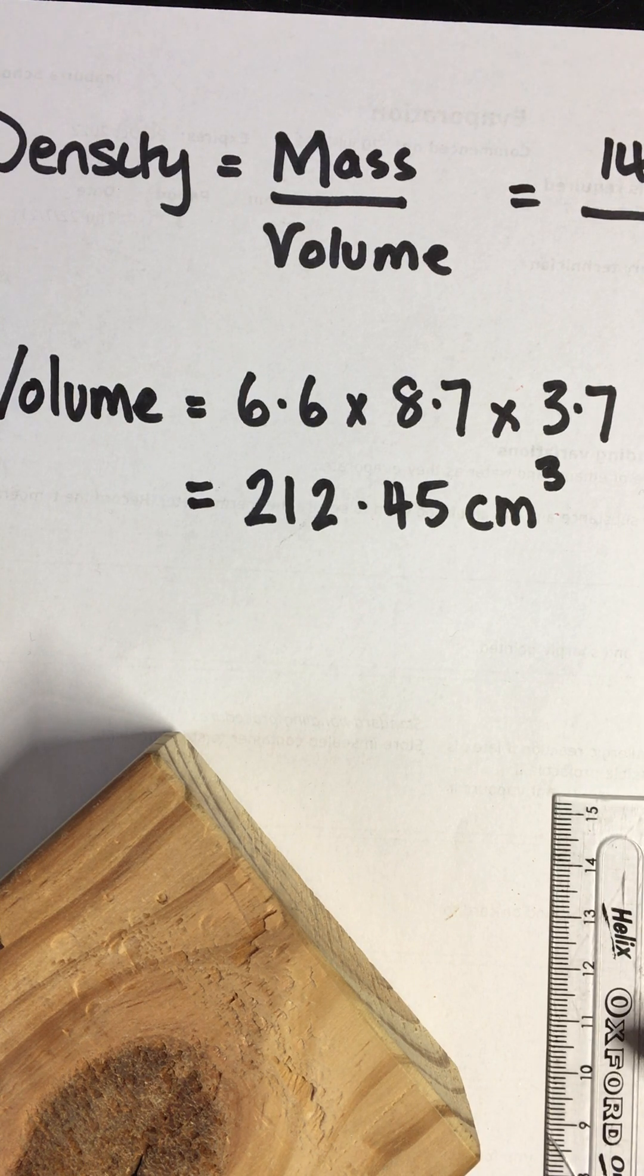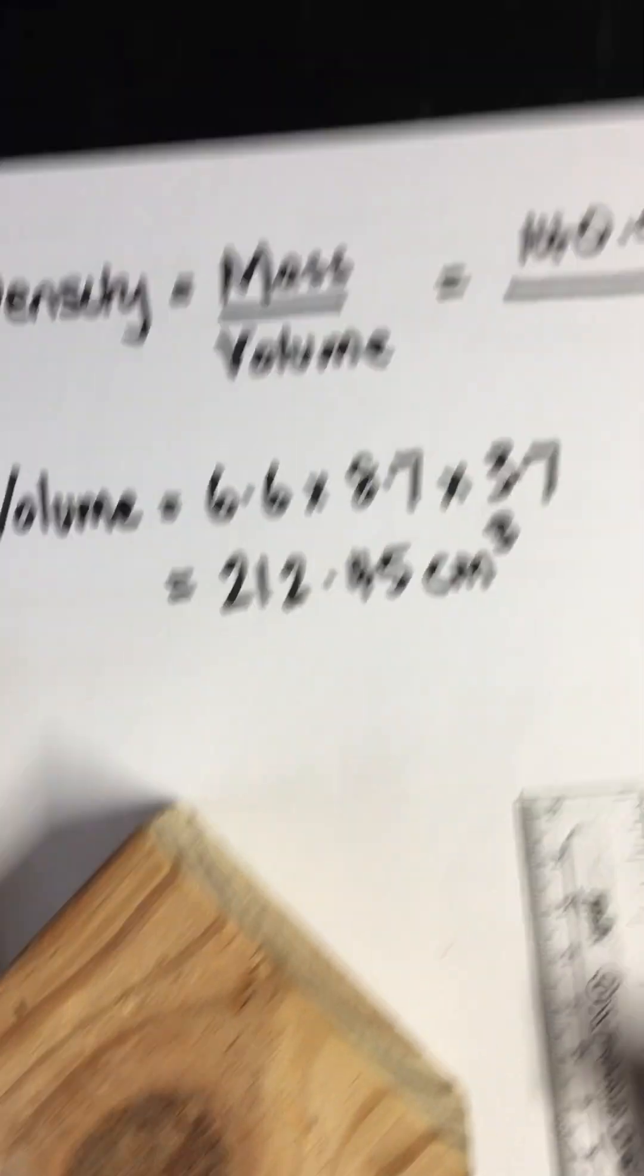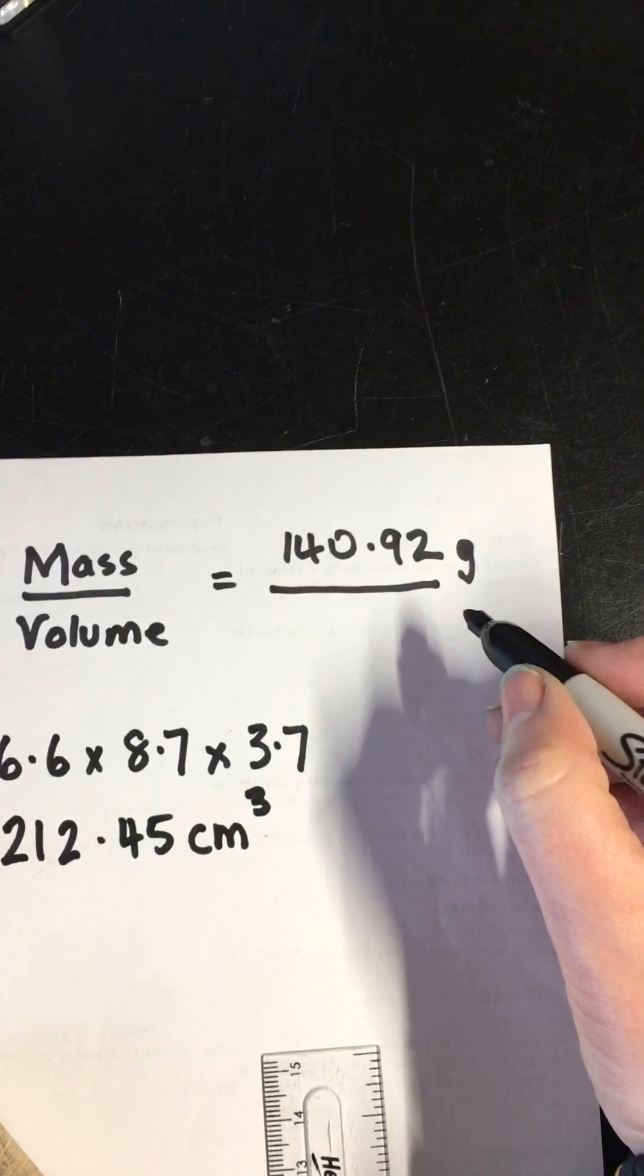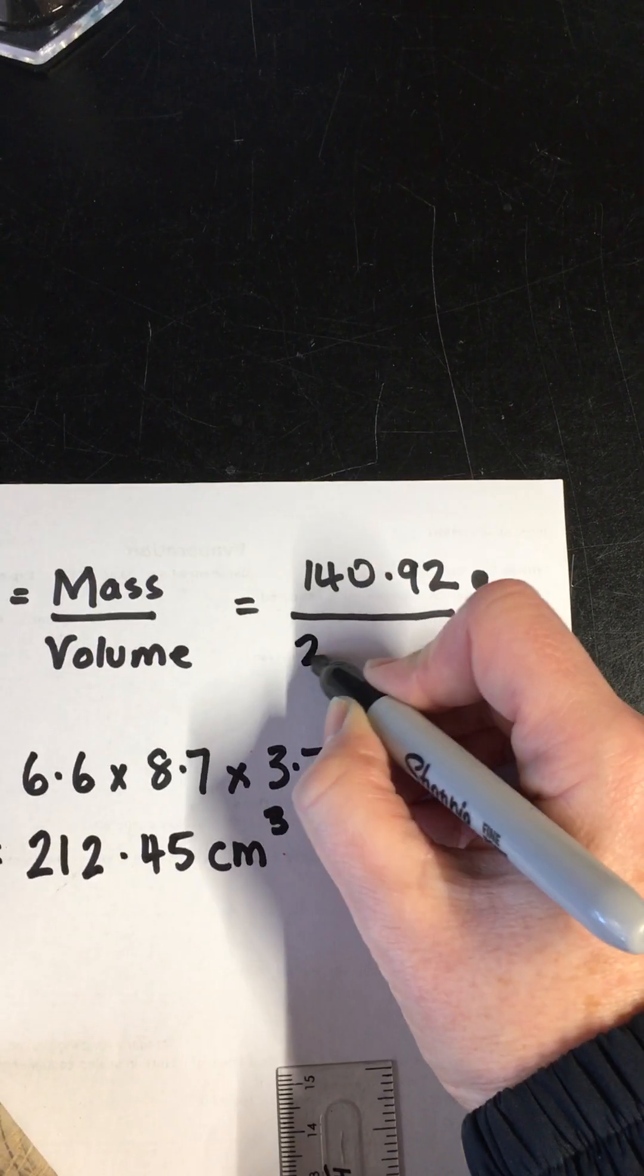Going back to our original density equation, density is mass divided by volume. So we take our mass of 140.92 divided by our volume.